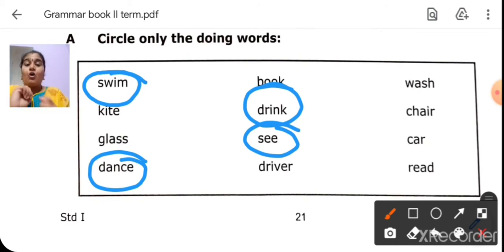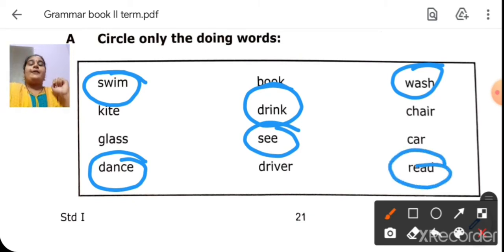Wash. Wash is an action. You are washing your hands, right? Wash. Chair. Chair is a thing. Car. Car is a thing. Read. So, read. We already saw that is a doing word. Super. So, we all did the first one. Can we move to the next one? Did you all circle it? Super.